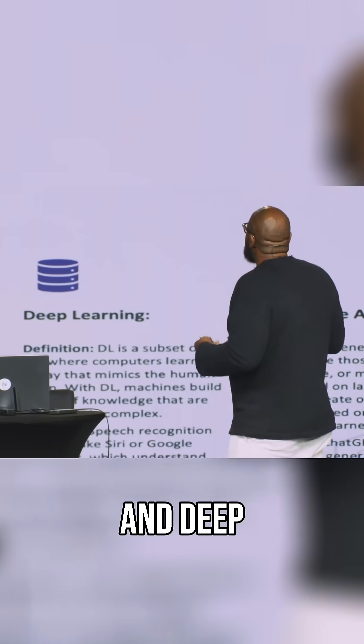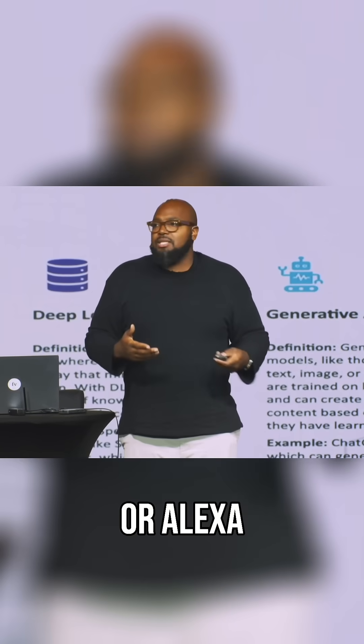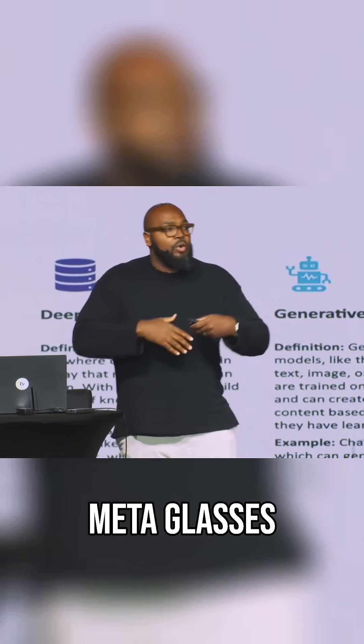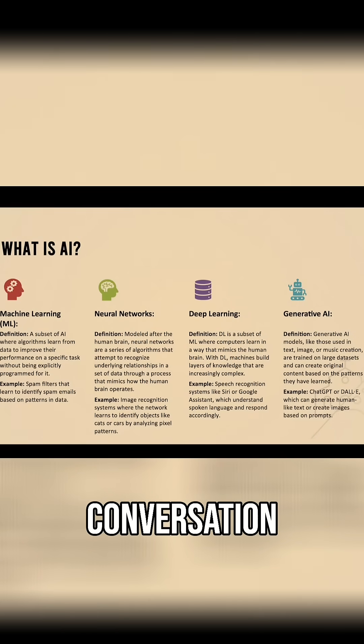Then we get to deep learning. Deep learning is the first time we really saw AI that was accessible to us, and that was Siri or Alexa or Amazon, or even my Meta glasses, where you're able to have a conversation with a particular set of data that can search the internet and give you conversation.